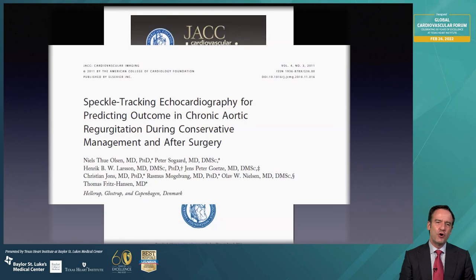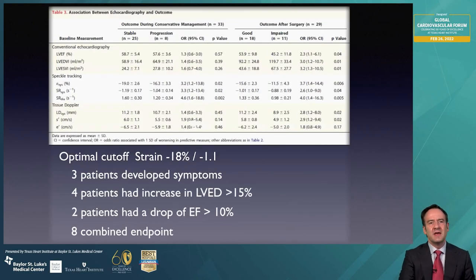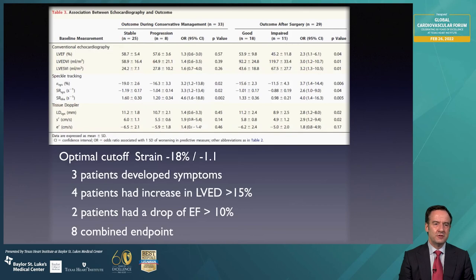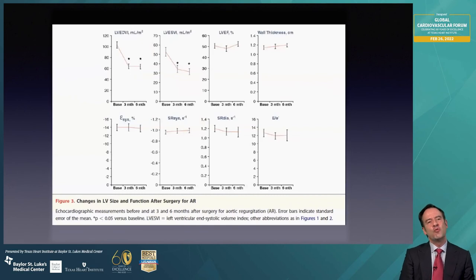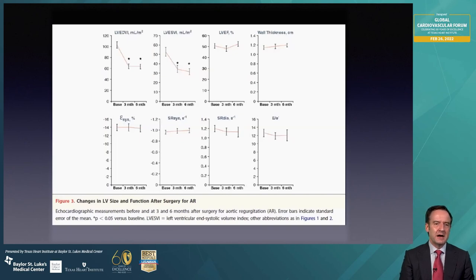In the setting of aortic regurgitation, global longitudinal strain is used to differentiate patients who will remain stable versus those who will progress. There is no statistically significant difference in ejection fraction or ventricular dimensions between progressors and stable patients — the only difference is in the global longitudinal strain. We were told in training that aortic insufficiency was a forgiving valvular lesion — that once addressed, the ventricle would shrink, ejection fraction would go up. But if you look at strain, once the strain is abnormal, it remains abnormal, telling you the damage is permanent.